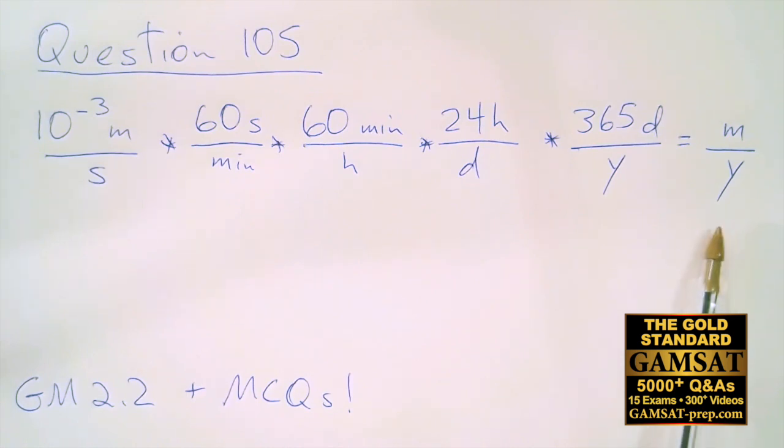To get to meters per year, I need to get rid of the seconds. We've already done dimensional analysis like this in past questions in this very pink booklet. So 60 seconds over a minute, 60 minutes over an hour, etc.